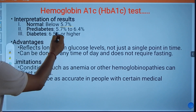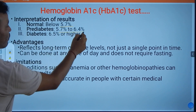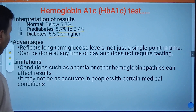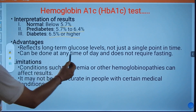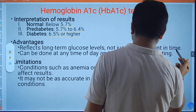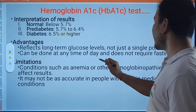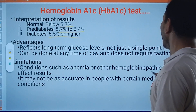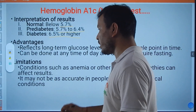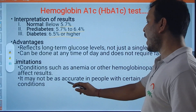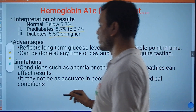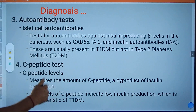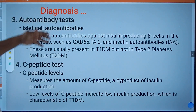Interpreting HbA1c results: below 5.7% is normal; 5.7% to 6.4% indicates pre-diabetes; 6.5% or higher indicates diabetes. Advantages of this test include that it reflects long-term glucose levels, not just a single point in time, and it can be done at any time of day without requiring fasting. Limitations include that conditions such as anemia or hemoglobinopathies can affect results, making it less accurate in people with certain medical conditions.